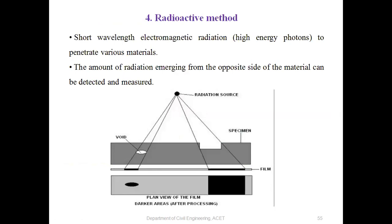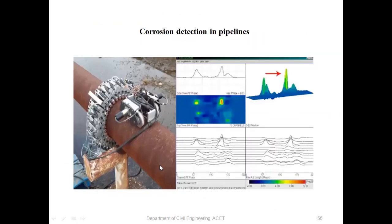The radioactive method: a wavelength is passed through the material; wherever there is a void it is detected and grouting is done. For corrosion detection in pipelines, the instrument is set on the pipeline and values are collected. If the values show high peaks, the corrosion level is indicated as high and repairs are carried out.